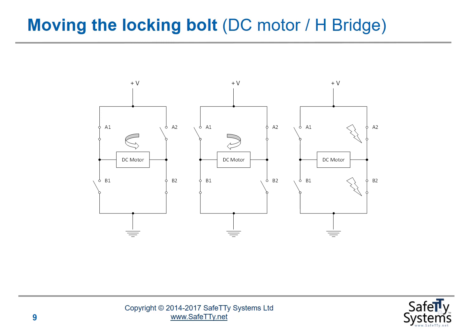To move the locking bolt we have a DC motor, and to control the DC motor we have an H-bridge arrangement. The H-bridge consists of four switches: A1, A2, B1, and B2. If we close A1 and B2, the motor moves in one direction. If we close A2 and B1, the motor moves in the reverse direction. If we close A2 and B2, or A1 and B1, we have a short and potential for sparking, or even a fire in the steering column — so this option is to be avoided. We are aiming to provide control of these switches to drive the DC motor in a forward or reverse direction.